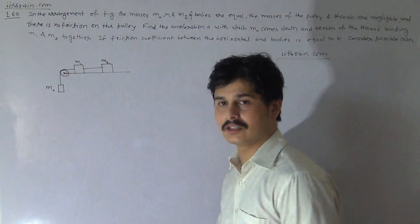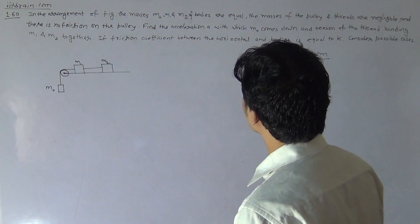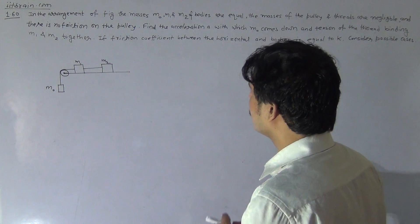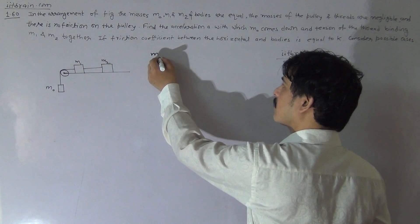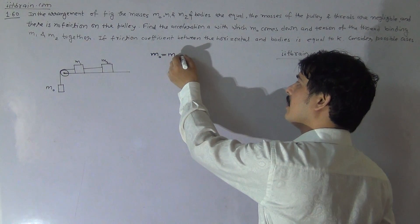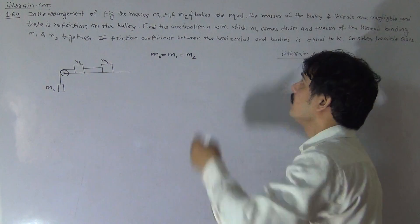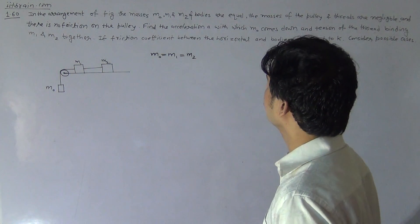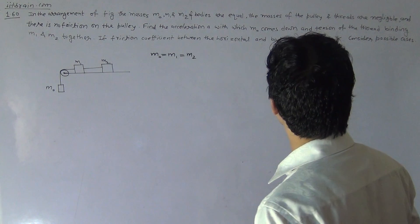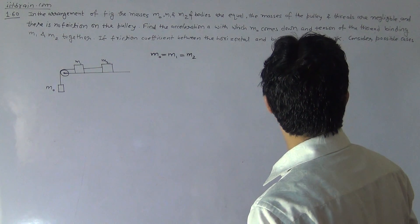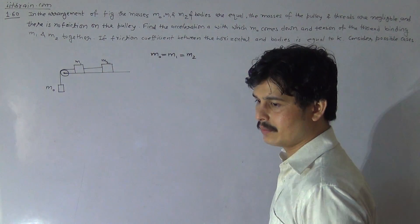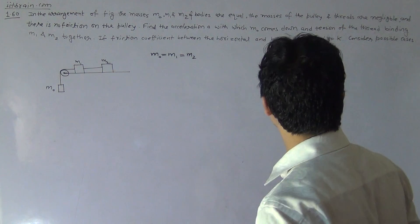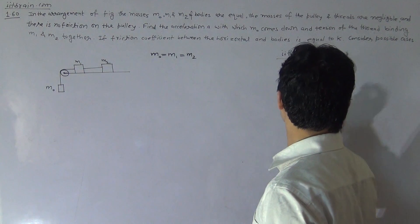Hello students, this is problem 1.60. In the arrangement of the figure, the masses are M0, M1, and M2. These bodies are the same numerically, meaning M0, M1, and M2 are all equal. The mass of the pulley and thread are negligible, and if there is no friction on the pulley, find the acceleration A with which M0 comes down and the tension in the thread binding M1 and M2 together. The friction coefficient between the horizontal surface and the body is equal to K. Consider possible cases.